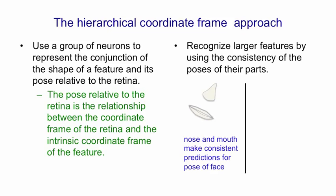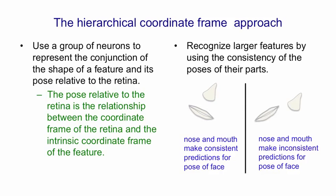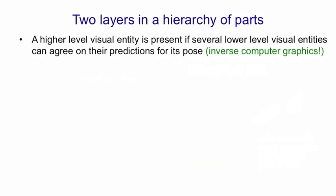If you look at this picture, we have a nose and a mouth, and they're in the right spatial relationship to one another. One way of thinking about that is that if you ask the mouth to predict the pose of the whole face, and if you ask the nose to predict the pose of the whole face, they'll make similar predictions. If you look on the right, we have the same nose and the same mouth but now they're in the wrong spatial relationship, which means if they separately make predictions about the pose of the whole face, those predictions won't agree at all. So here are two layers in a hierarchy of parts where larger parts can be recognised by consistent predictions from smaller parts.